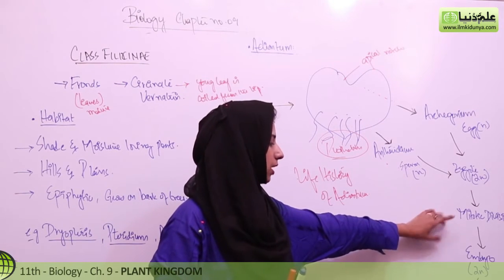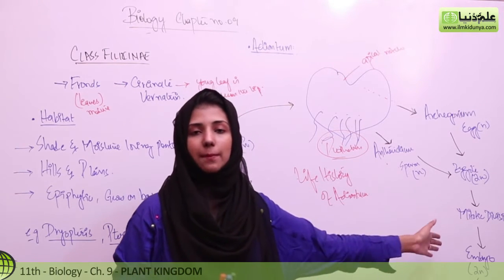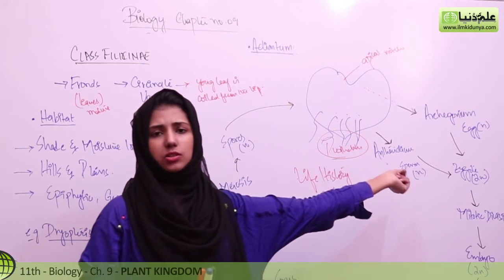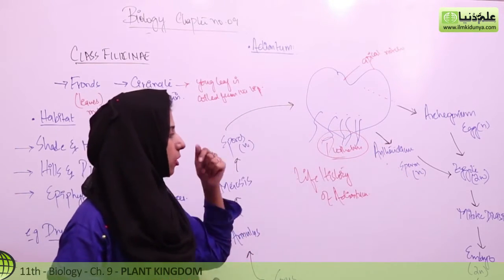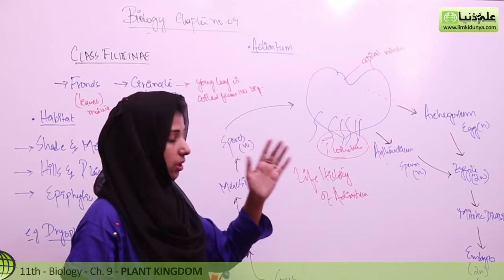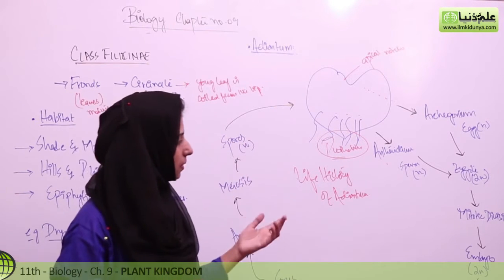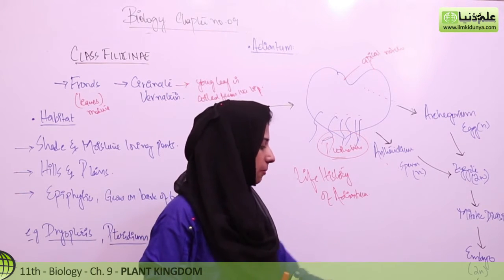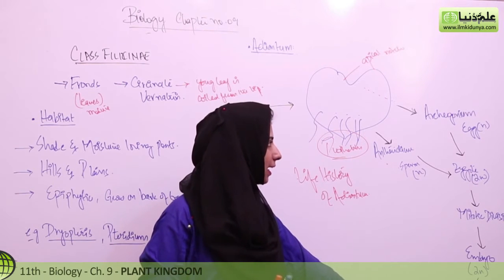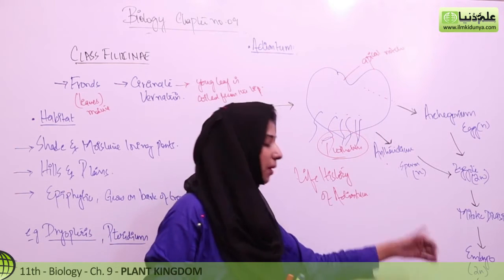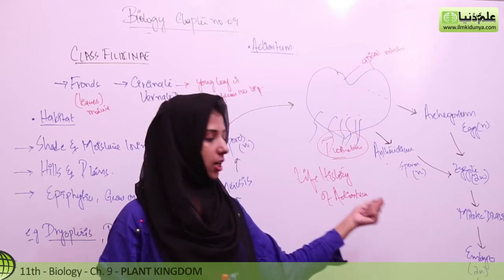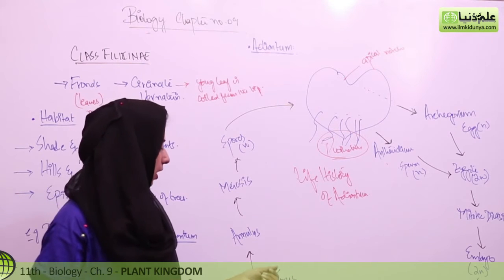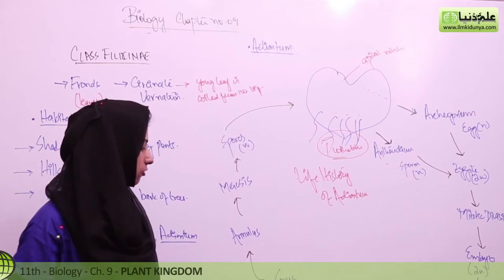The zygote will undergo further mitotic divisions to form a multicellular embryo. The zygote is unicellular, and to convert it into a multicellular embryo, it undergoes mitotic divisions. Mitotic divisions produce the embryo. The gametophyte will generate the young sporophyte, which is also present in nature, and it will lead to the formation of sori.